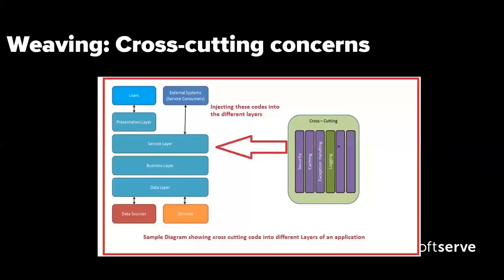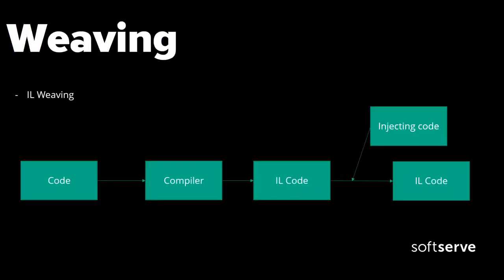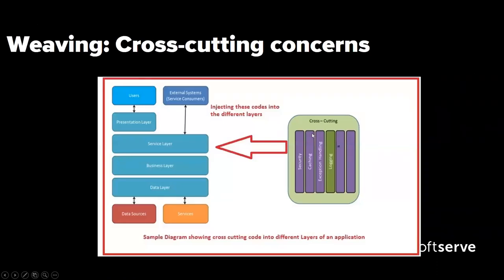One other thing I mentioned at the beginning is about cross-cutting concerns — why we want to inject code in the intermediate language. Because we don't want to mix codes at this level. We want to have the original codes as simple and as clean as possible. If there are cross-cutting concerns like metrics for measuring time, logging, or security, we want to have them in a separate part. All of these cross-cutting concepts have to be injected into different parts of the application without mixing them.